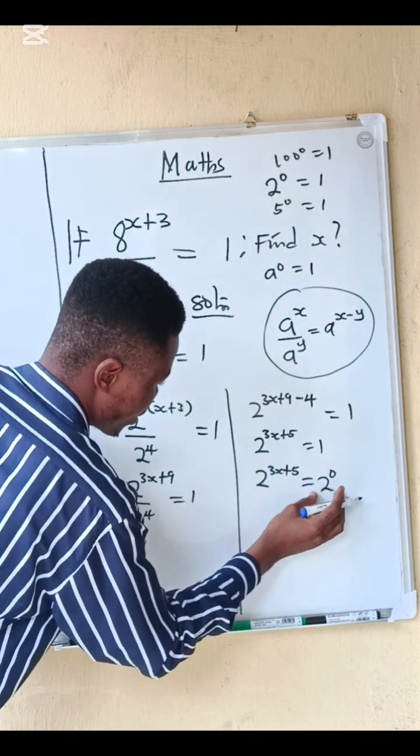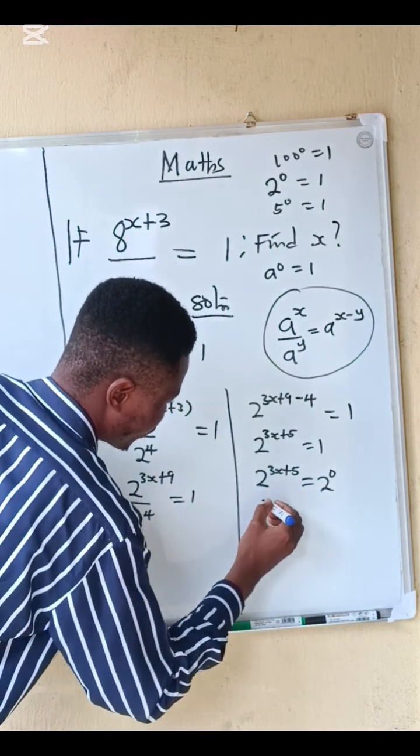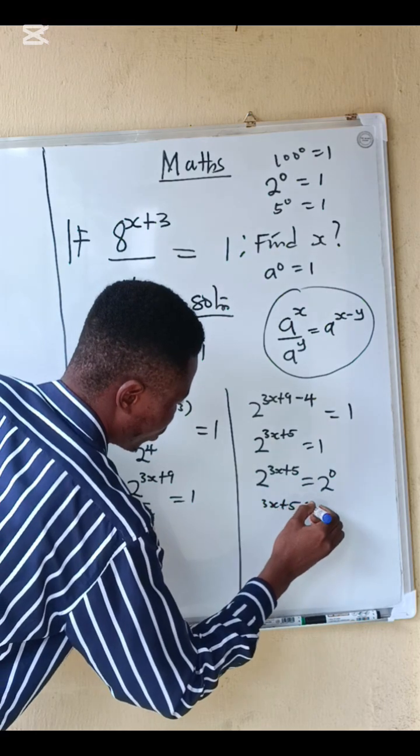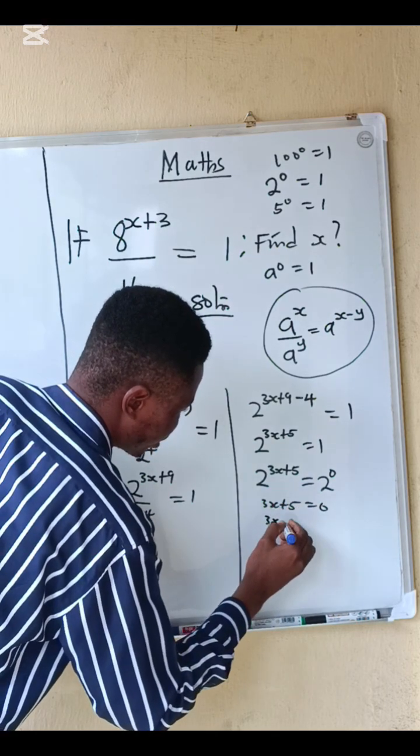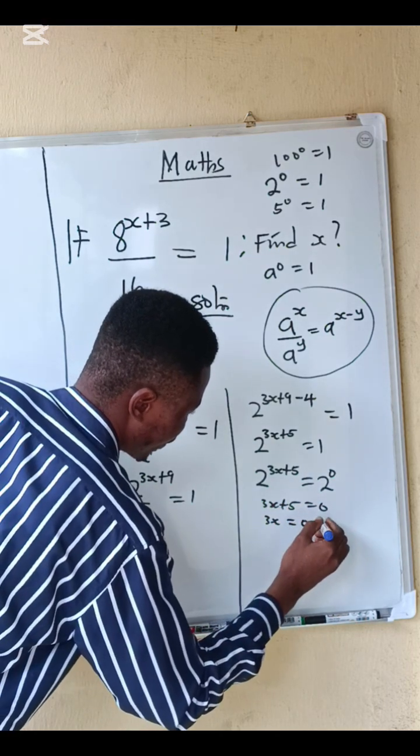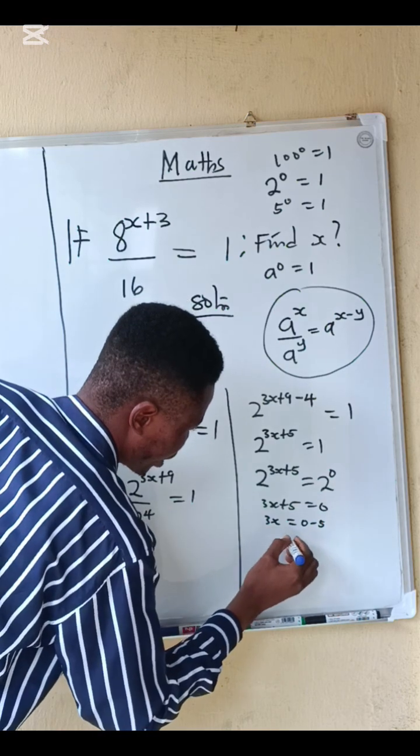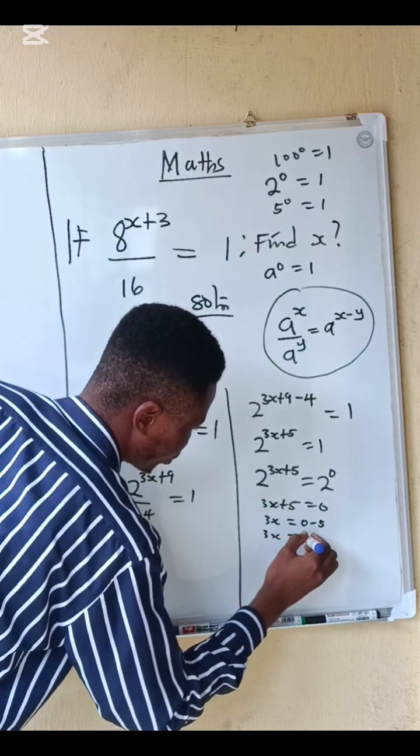In this case, they have the same base, you equate the powers. We have 3x plus 5 equals to 0. So 3x equals to 0 minus 5. Taking this to the other side, we now have 3x equals to minus 5.